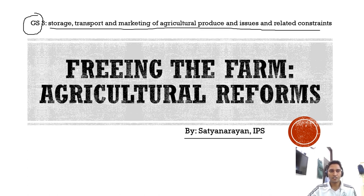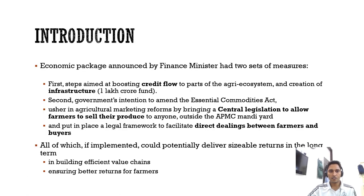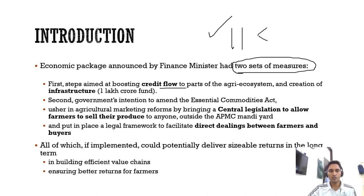We are going to discuss agricultural reforms announced by the Finance Minister under the Atma Nirbhar Bharat Abhiyan package. There were mainly two types of measures. If we divide all 11 measures pronounced by the Finance Minister, we can categorize them: first, related to credit flow to parts of the agricultural ecosystem and the creation of infrastructure. For example, a one lakh crore fund for agricultural infrastructure.